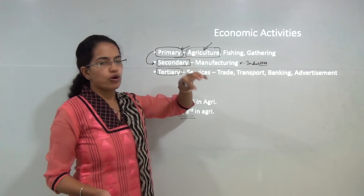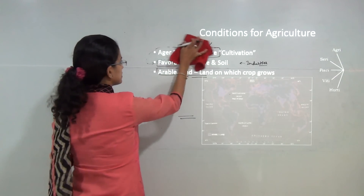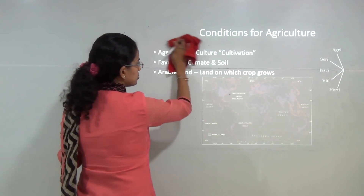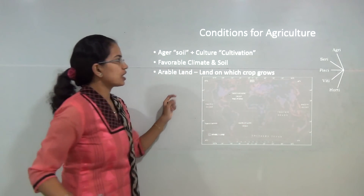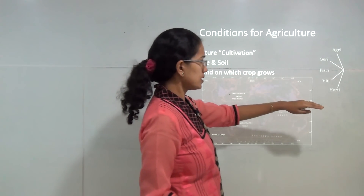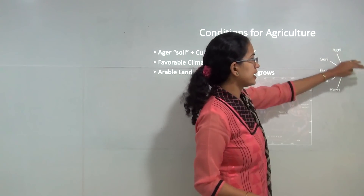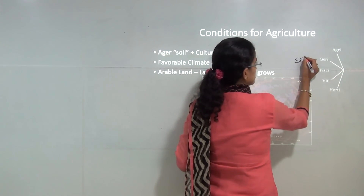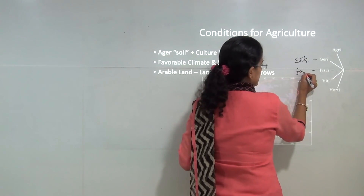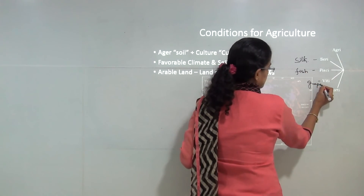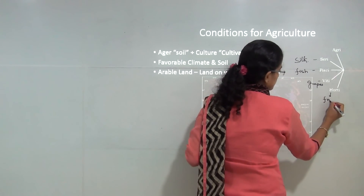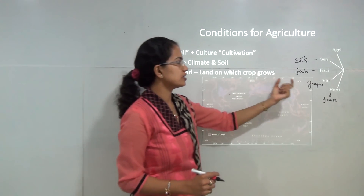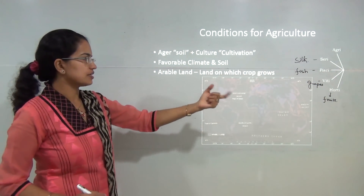Agriculture definitely forms a substantial portion of the total economic condition. The word agriculture is derived from two words: 'agri' plus 'culture,' where agri means soil and culture means cultivation — so cultivation on soil is agriculture. Related terms include sericulture (cultivation of silkworms), pisciculture (fishes), viticulture (grapes), and horticulture (fruits and gardening).